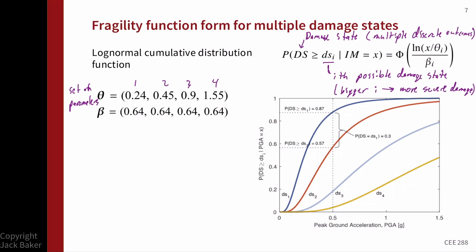In the plot, damage state 1 (in blue) shows the highest probabilities for a given peak ground acceleration, relative to the other damage states. It's relatively easy to reach a minor damage state compared to a complete damage state, so higher probabilities make sense. This blue fragility function gives the probability of being in minor damage state or worse — it's still a binary outcome: either reaching that damage state or not. For damage state 2 (in red), probabilities are lower — it's less likely to reach moderate damage state or worse — and this continues for more severe damage states.